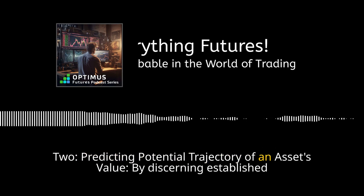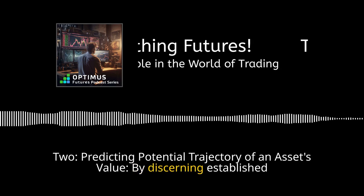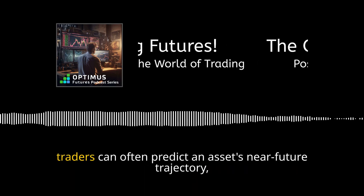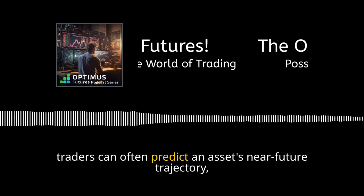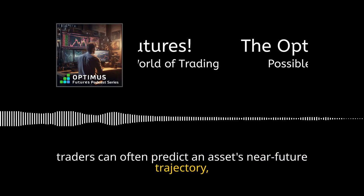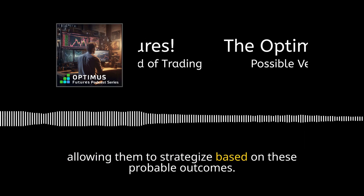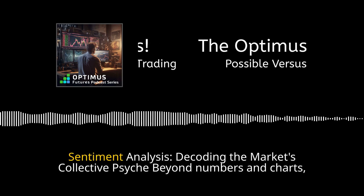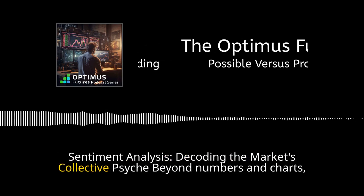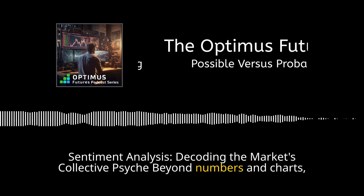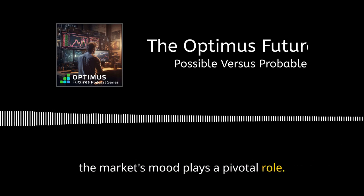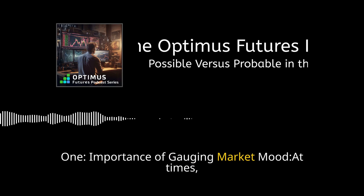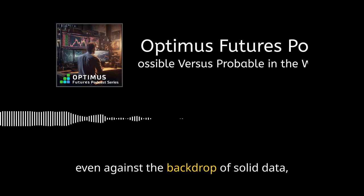By discerning established chart patterns such as head and shoulders or double tops, traders can often predict an asset's near-future trajectory, allowing them to strategize based on these probable outcomes. Sentiment analysis decodes the market's collective psyche — beyond numbers and charts, the market's mood plays a pivotal role.